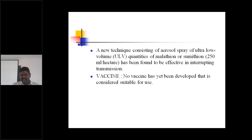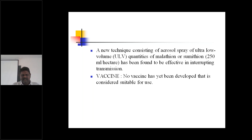A new technique consists of aerosol spray of ultra-low-volume quantities of Malathion or Sumithion at 250 ml per hectare, which has been found to be effective in interrupting transmission.